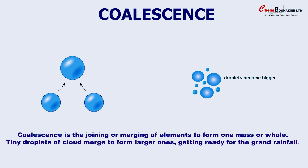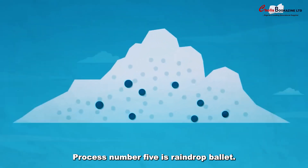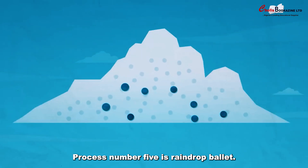Coalescence is the joining or merging of elements to form one mass or whole. Small droplets of cloud merge to form larger ones, getting ready for the ground rainfall.